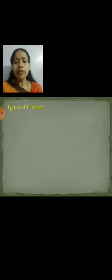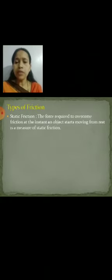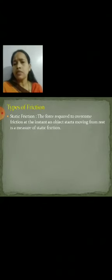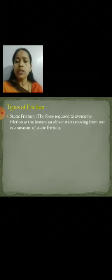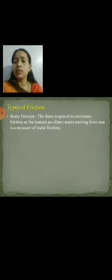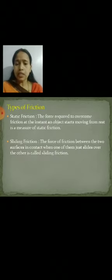Now, types of friction. First is static friction. This is the friction at the instant an object starts moving. The force required to overcome friction at the instant an object starts moving from rest is a measure of static friction.